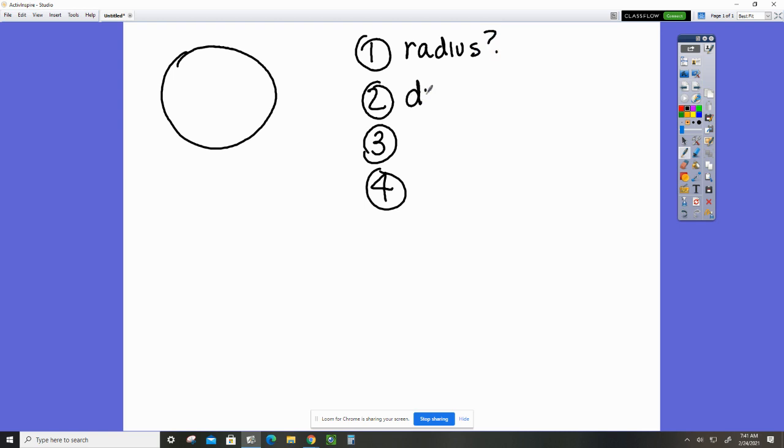Okay, we are going to review for our DMR quiz over circle formulas. The DMR quiz is going to ask you four questions: what is the radius, what is the diameter,